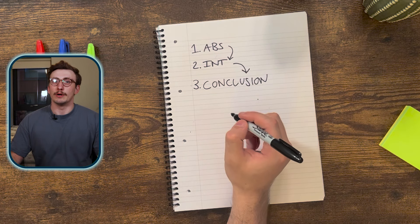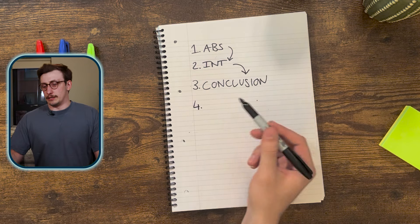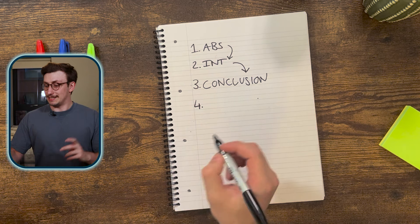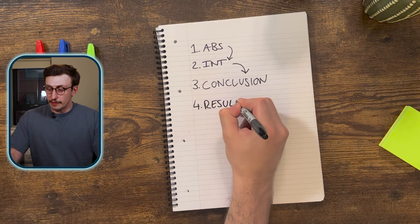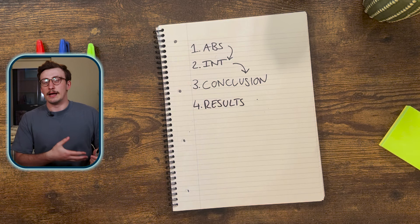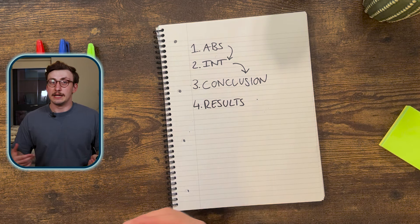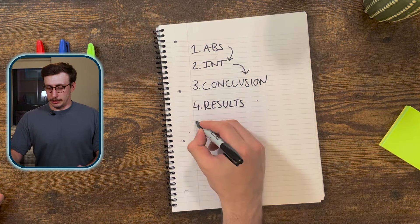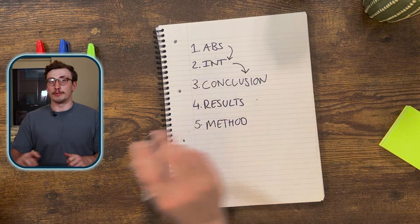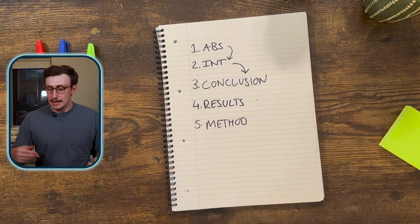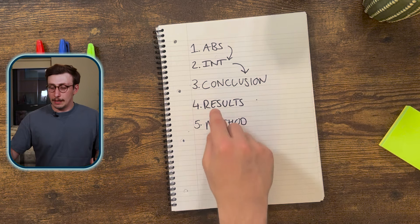Once you've read the conclusion, you want to go back into the main body for more nuanced detail. Rather than going straight to the methodology, I find it's better to go to the results first. Looking at the results before the methodology gives context for what the researchers found, and then you can work backwards more easily. After the results, you go back and read the methodology to understand how they got there — and in fields like astrophysics, you can even replicate the method using publicly available data.